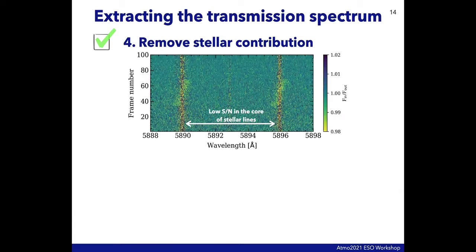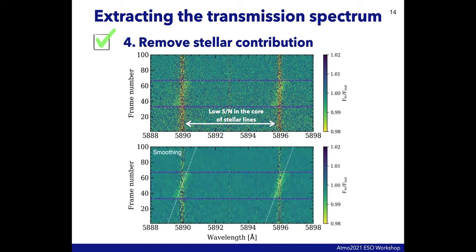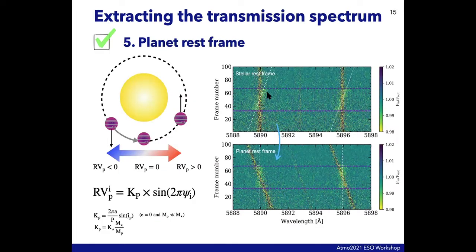Zooming into the residual maps around the sodium lines, we see a lot of noise in the line core due to lower signal-to-noise there, but we can also tentatively see the exoplanet atmosphere signal — appearing only during the transit and showing a slope in radial velocity. Smoothing the maps can help visualize the absorption more clearly.